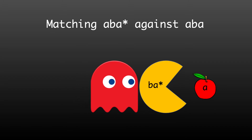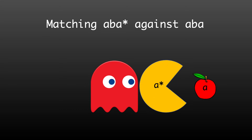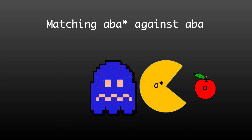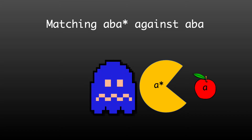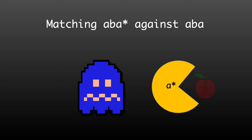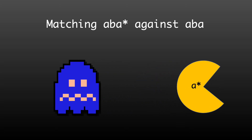So we eat a banana. Now the regular expression that we have left to match is A star. Technically, the apple and banana already match the regular expression ABA star, so the ghost becomes edible and starts running away. But we can still eat another apple, and the regular expression that is left to match is still A star, and the ghost is still running away.